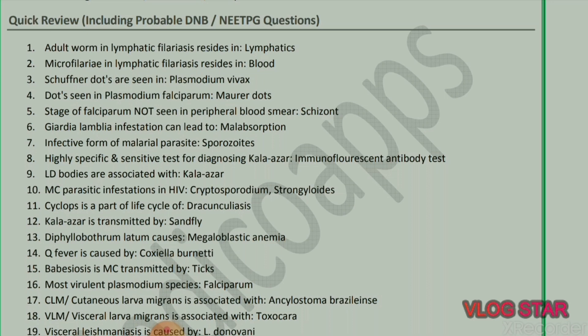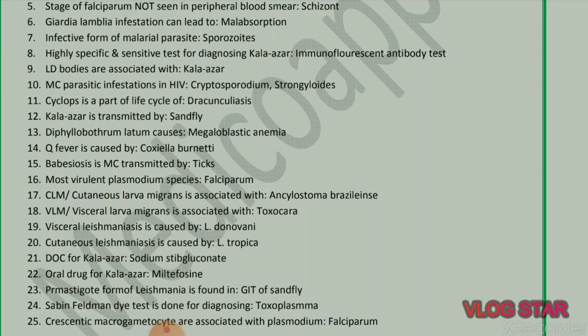Infective form of malarial parasite: sporozoites. Highly specific and sensitive test for diagnosing kala-azar: immunofluorescent antibody test. LD bodies are associated with kala-azar. Most common parasite infestation in HIV: Cryptosporidium and Strongyloides. Cyclops is part of the life cycle of dracunculiasis. Kala-azar is transmitted by sandfly. Diphyllobothrium latum causes megaloblastic anemia. Q fever is caused by Coxiella burnetii. Babesiosis is most commonly transmitted by ticks. Most virulent Plasmodium species: falciparum.